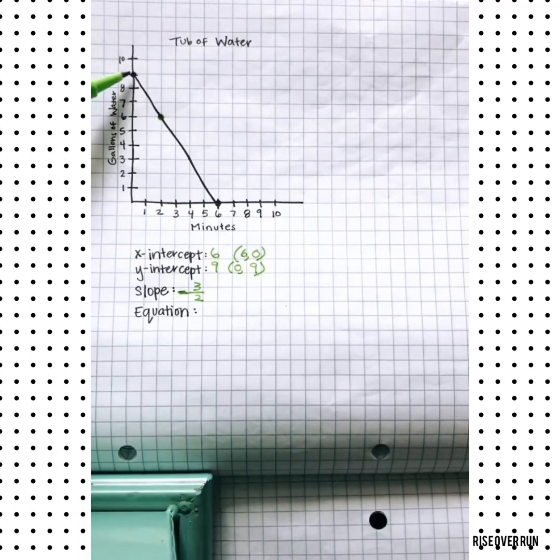This intercept here, the y-intercept 9, means that it started with 9 gallons of water, that's the initial value, and that will be important.